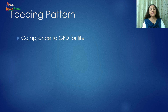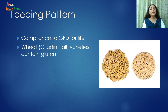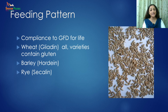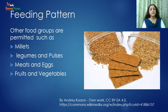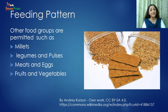Treatment involves the elimination of gluten-containing foods: wheat containing gliadin, barley containing hordein, rye containing secalin, and oats containing avenin — all these must be eliminated from the diet so that complete recovery of the villi can occur. Other food groups are permitted. A person can take millets as they are inherently free from gluten: foxtail millet, barnyard millet, kodo millet, proso millet, finger millet, sorghum and pearl millet are all beneficial alternatives since the person is abstaining from wheat.